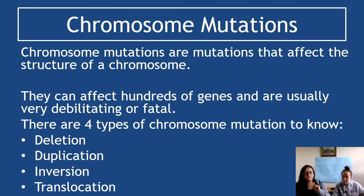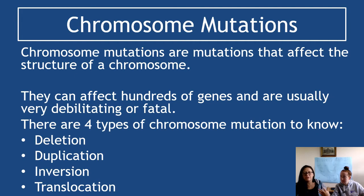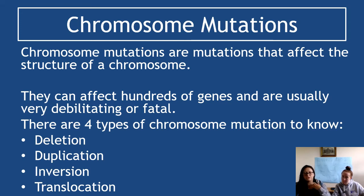There are four types of chromosome mutation you need to know: deletion, duplication, inversion, and translocation. A little understanding of the English language really helps here — duplication means a copy is being added, inversion means to turn something upside down, and translocation means changing location, so it involves swapping the location of genetic material. They all give a big clue as to what they are.